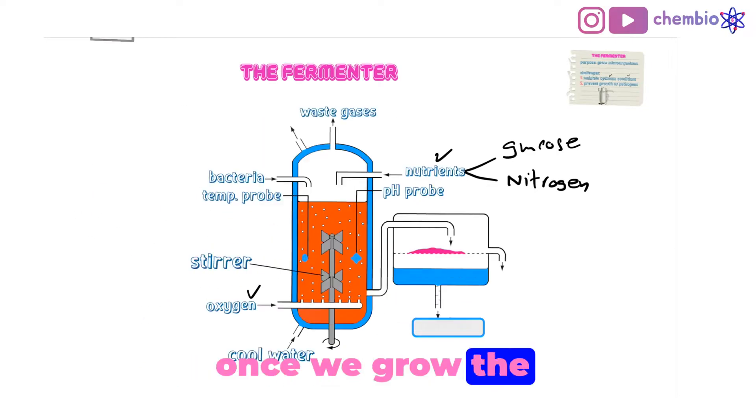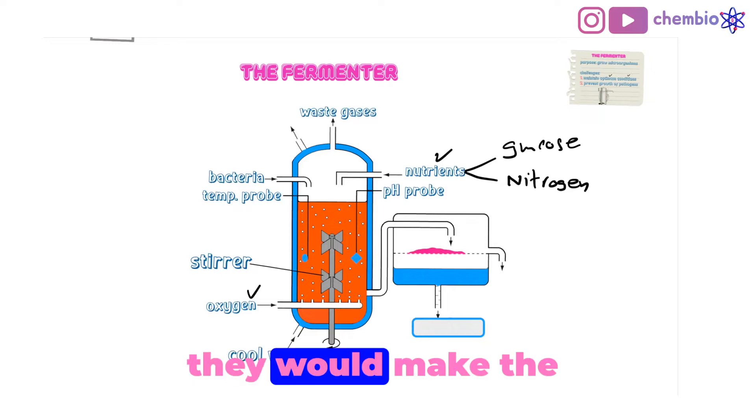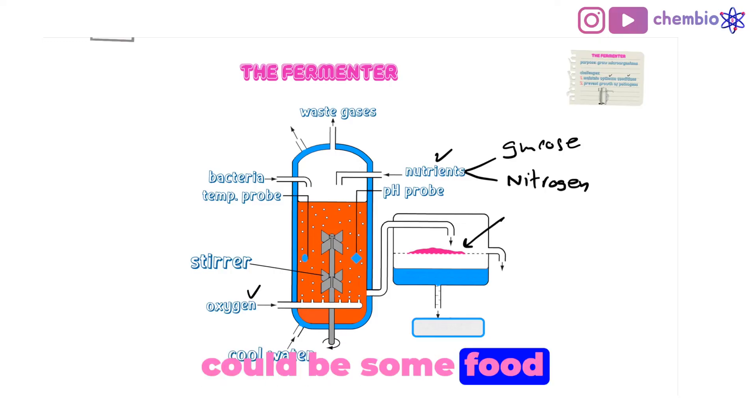Lastly, once we grow the bacteria in these right conditions, they would make the products we're interested in. This product could be an enzyme, could be some food components, it could be antibiotic.